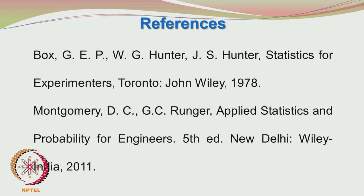In today's series of lectures, we will be looking at factorial design of experiments. Some of the popular references for this topic are shown in this slide. The first one is the book by Box, Hunter and Hunter, Statistics for Experimenters by John Wiley published in 1978.